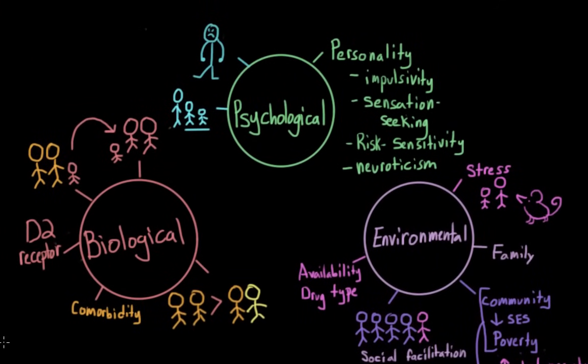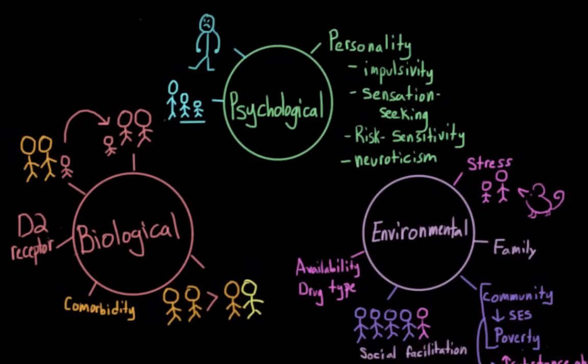So we've talked about biological risk factors, psychological risk factors, and environmental risk factors. But I want to note that even though I've discussed them separately, these three things are actually interconnected. Certain environmental factors might put an individual at a greater risk for drug abuse. But it is only when those things are combined with biological and psychological predispositions that they would start to take effect.